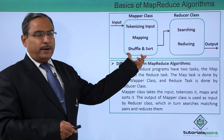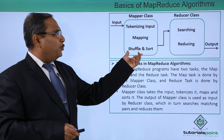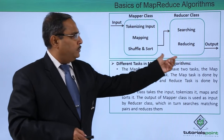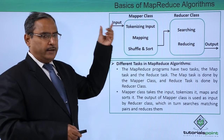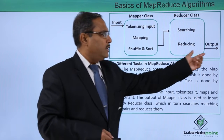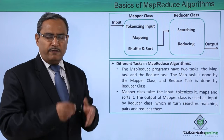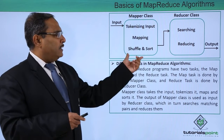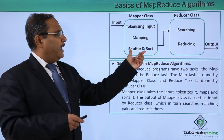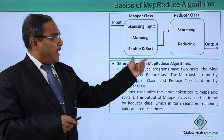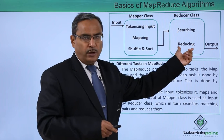Here we have the mapper class and the reducer class. The output of the mapper class will be the input to the reducer class. The mapper class takes the input, and ultimately from the reducer class the output is formed. These inputs and outputs are in the form of key-value pairs. The mapper class performs tokenizing, mapping, shuffle and sort, while the reducer performs searching and reducing operations.